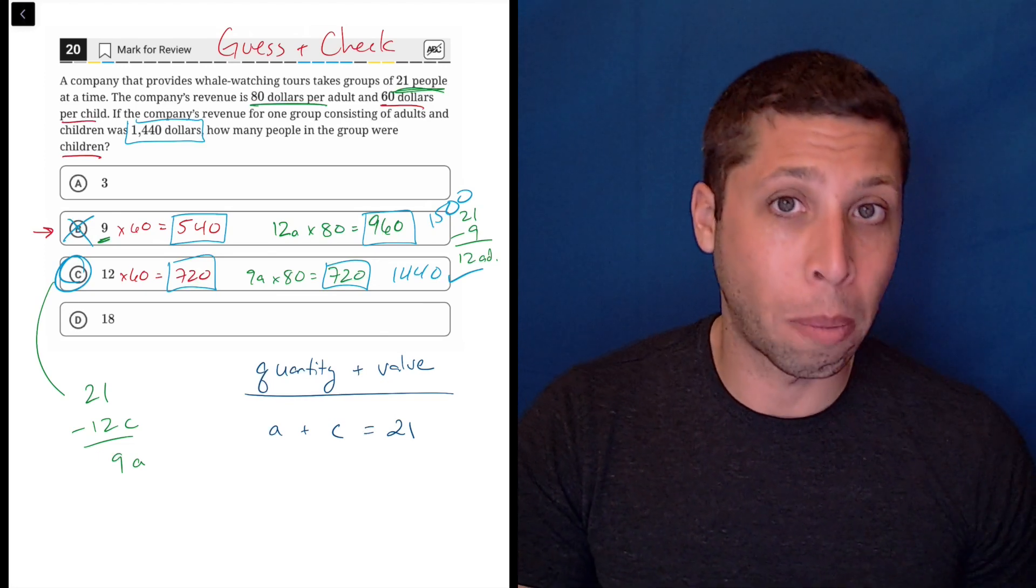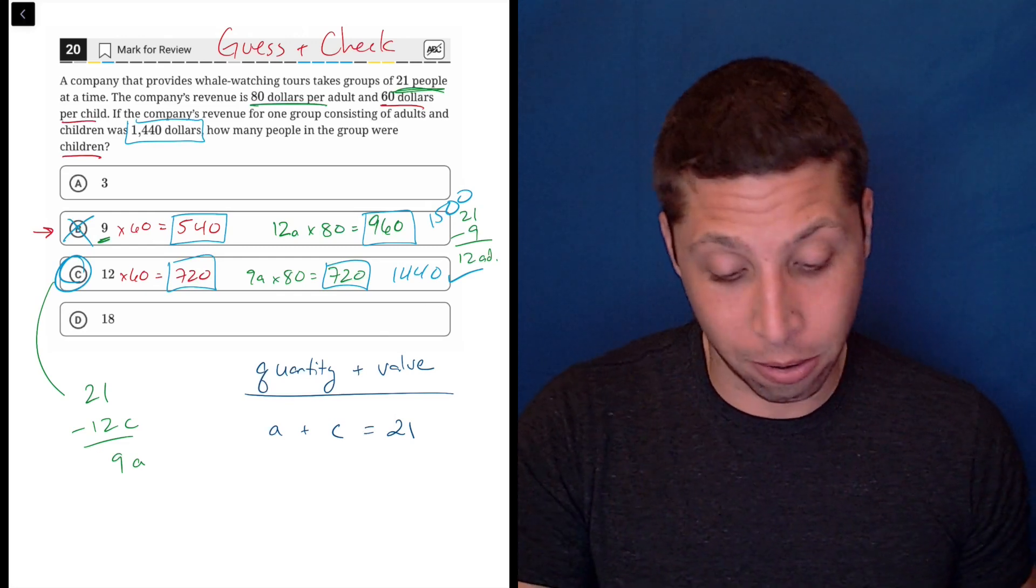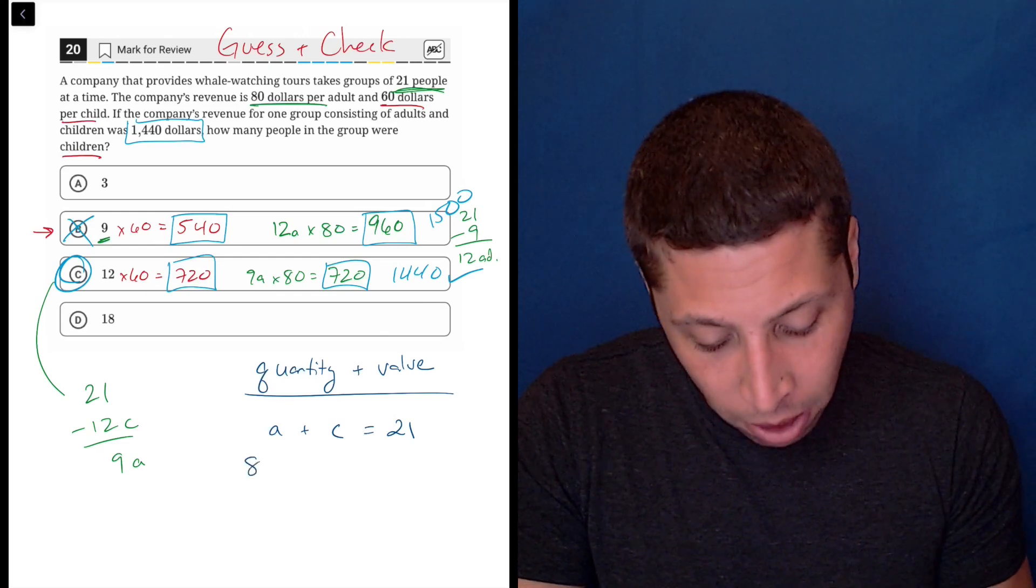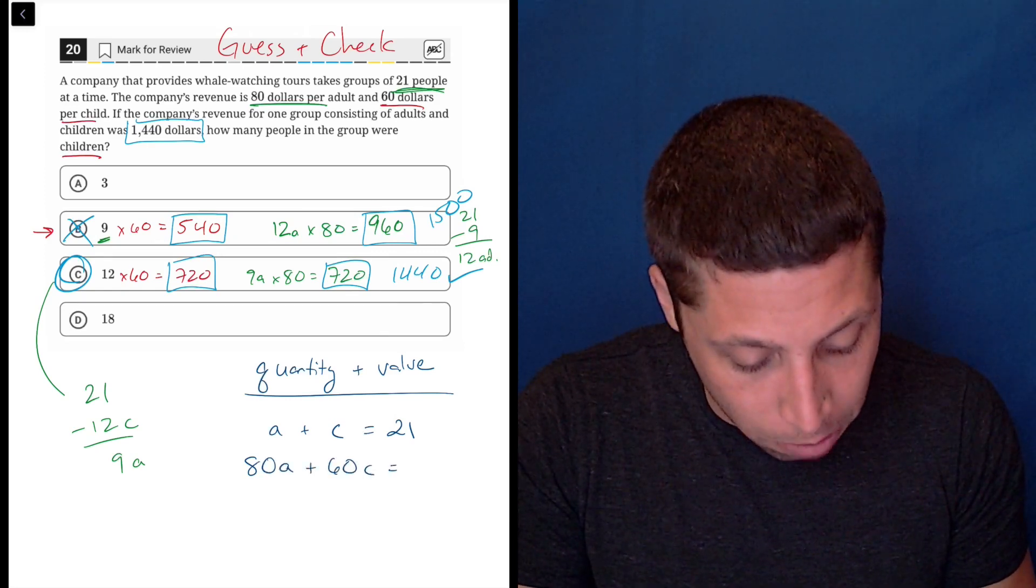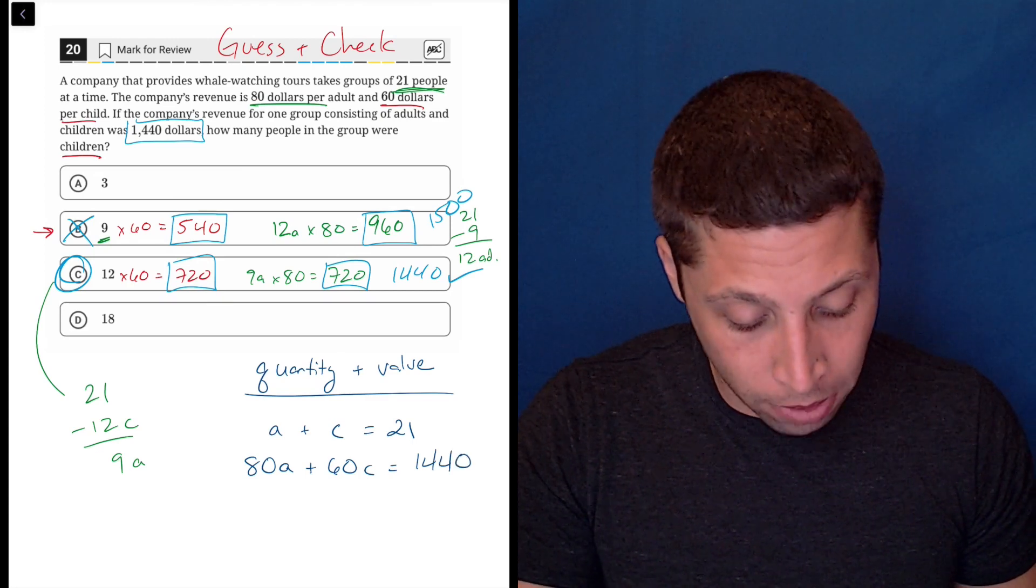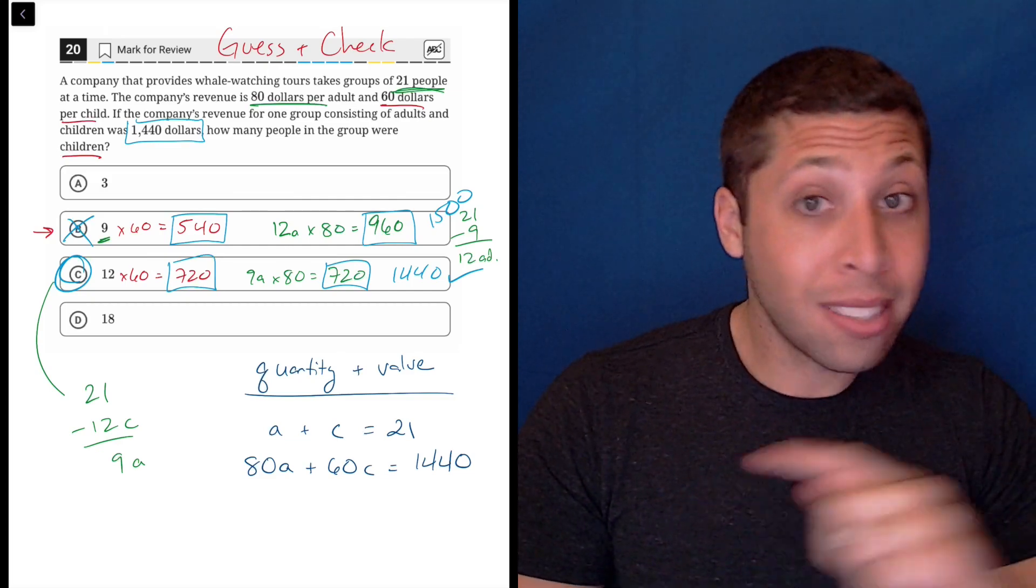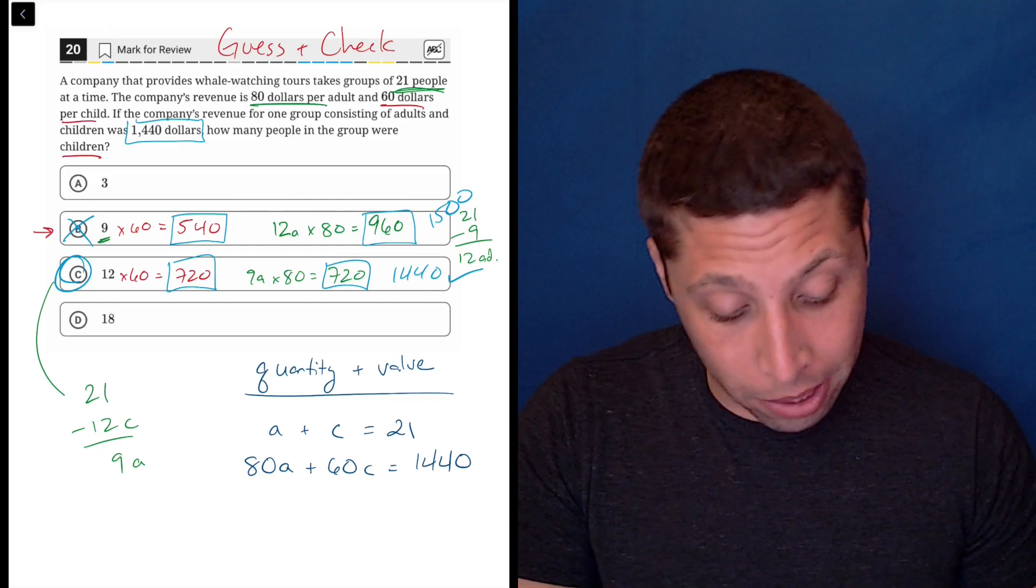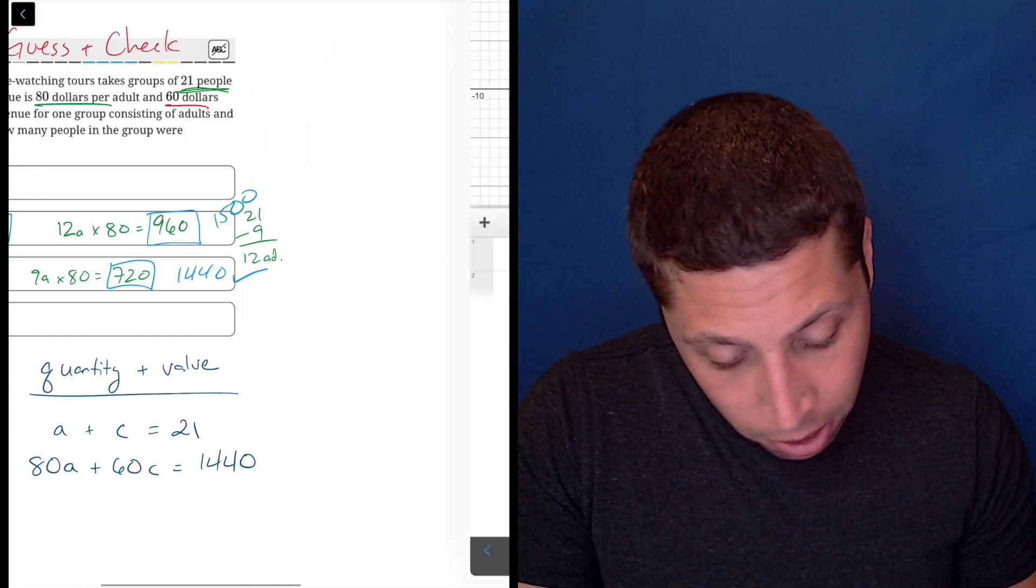Then we need a second equation to represent the value of that stuff. So these people have value here or what we would call a cost. So adults are $80 a piece. Children are $60 a piece. And that gives us a total value of 1,440. So if I wrote those equations correctly, I still would not solve this with algebra because it's going to just be time consuming and I would much rather use the calculator.